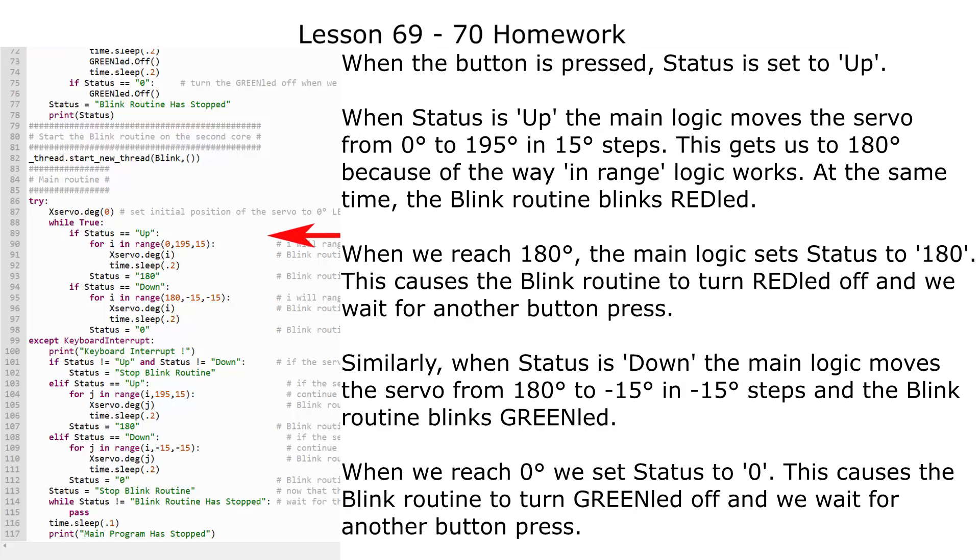When the button is pressed, status is set to up. When status is up, the main logic moves the servo from zero to 195 degrees in 15 degree steps. This gets us to 180 degrees because of the way in-range logic works. At the same time, the blink routine blinks the red LED.